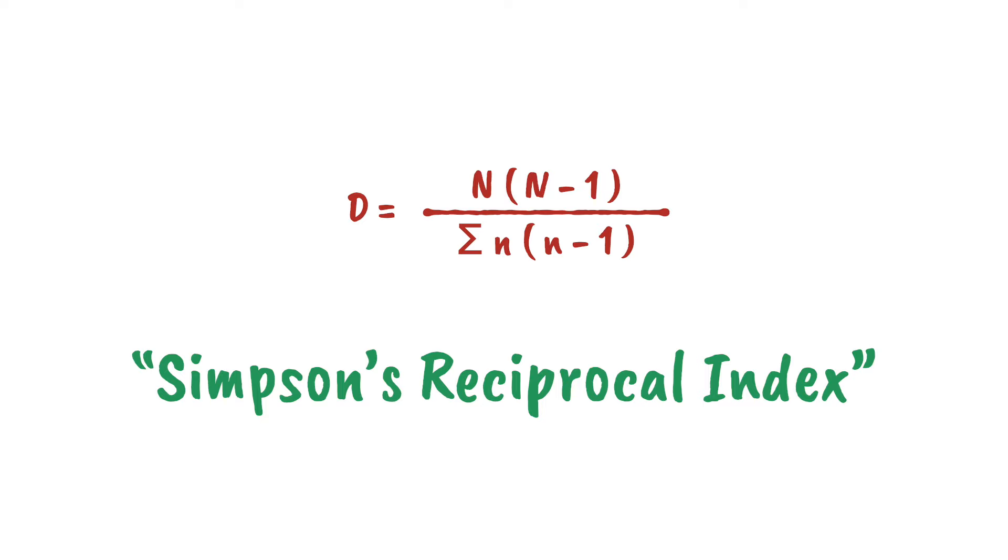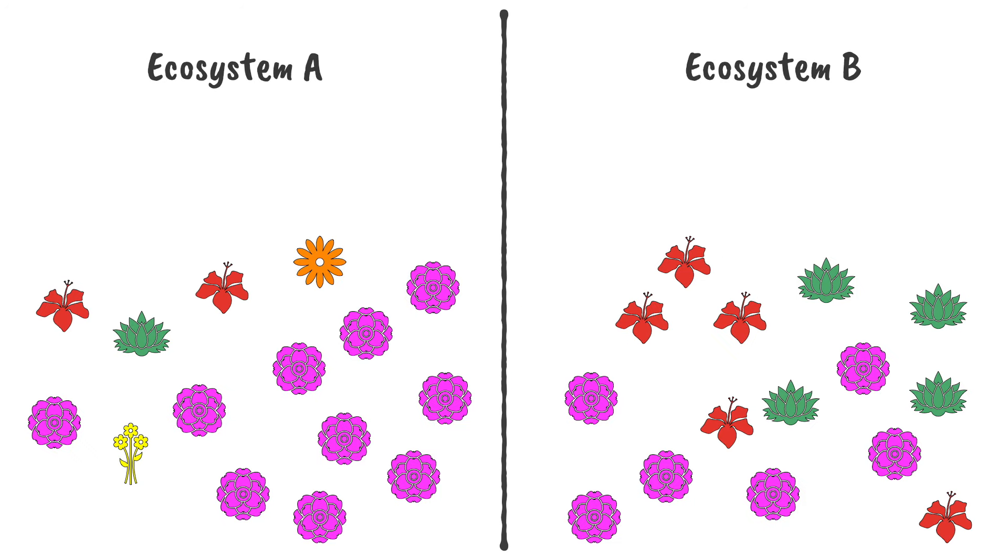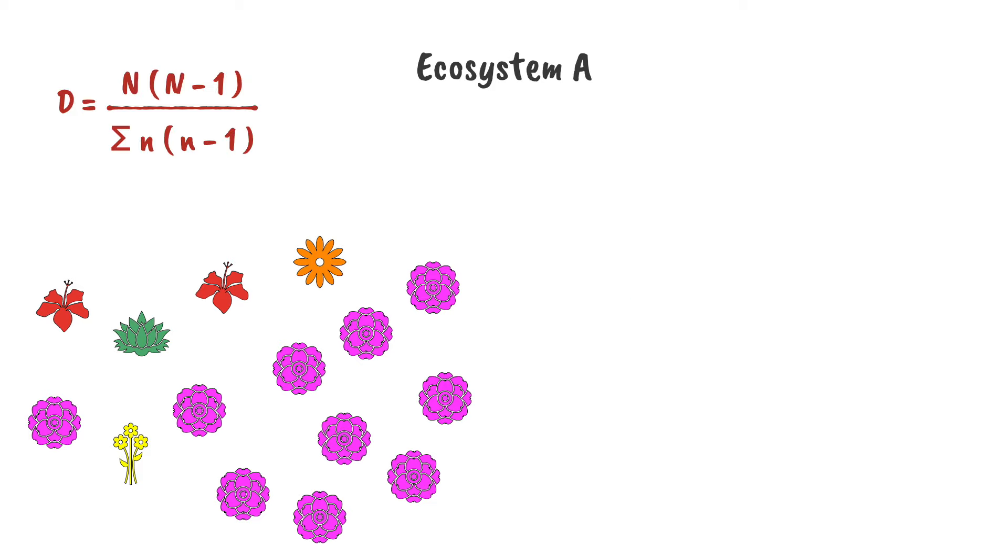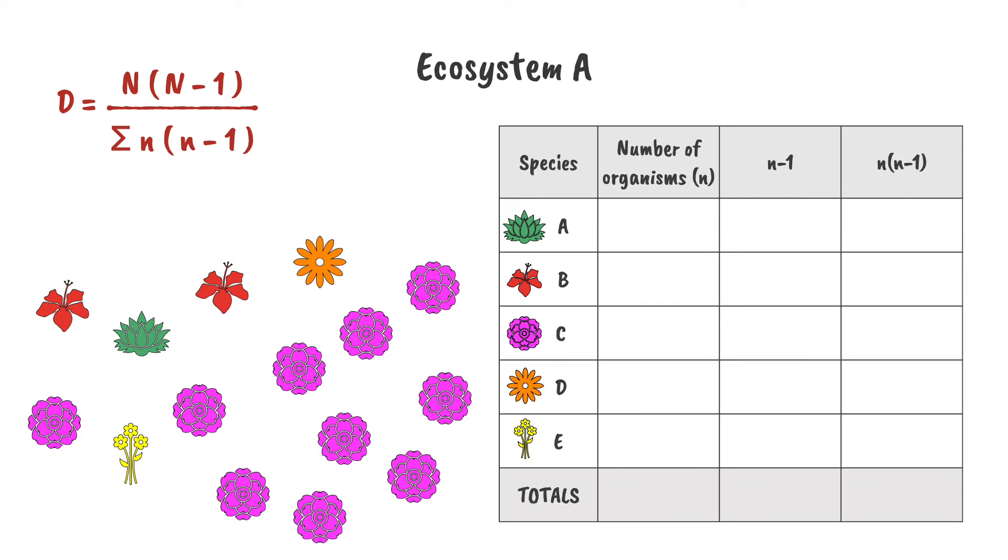So, how does it work? As a simple example, let's compare the species diversity with respect to plants in these two ecosystems. We'll start with ecosystem A. It's not immediately obvious what values need to go into the calculation, but if we start by entering the numbers into a table, everything should go smoothly. This ecosystem has five species.